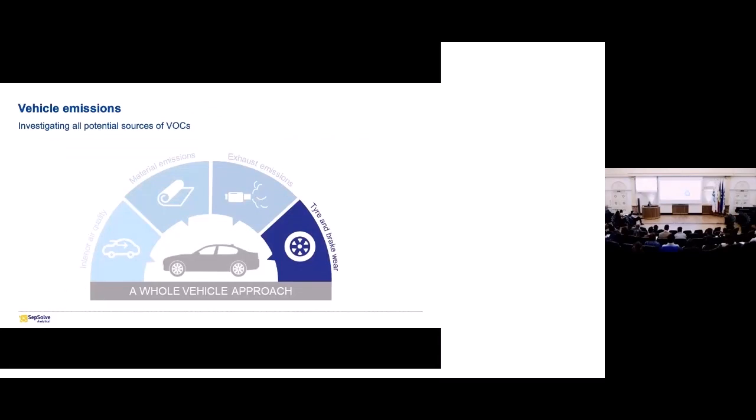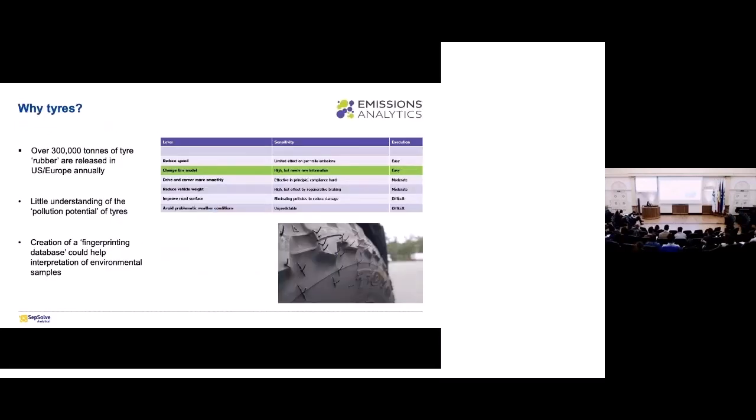Then finally, we have the tire and brake wear aspect. So I mentioned that this is becoming increasingly important because there are so many of these hybrid vehicles and electric vehicles, which of course have no exhaust emissions whatsoever. But they're heavier, so it's putting more pressure on the tires and generating more tire wear and releasing more emissions from that aspect. And what we've seen is that actually there's over 300,000 tons of tire rubber that's released into the environment within the US and Europe annually. So that's been calculated based on the number of cars that are in use. But there's little understanding as to what the tires are actually emitting, what compounds are making their way into the environment, what the fate of them is and what the potential hazards of these compounds are, the toxicology behind them.